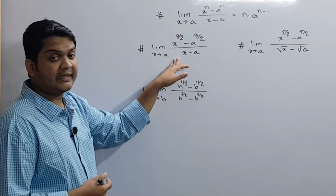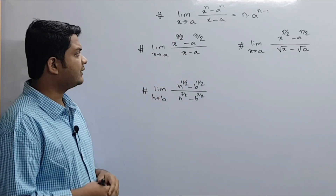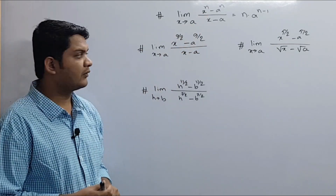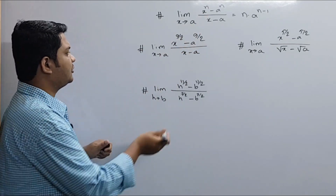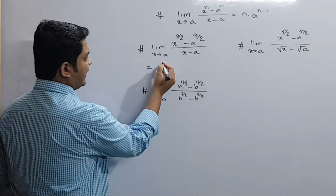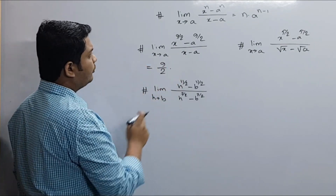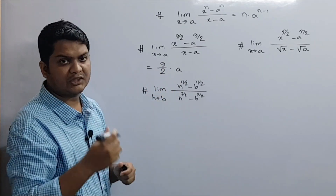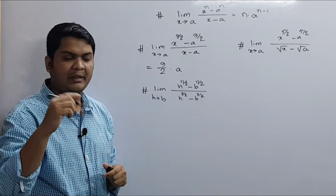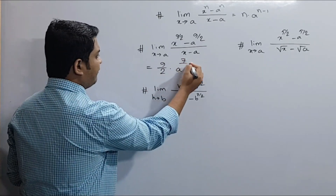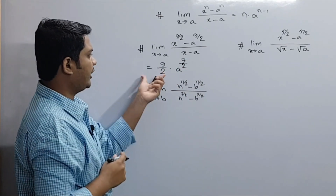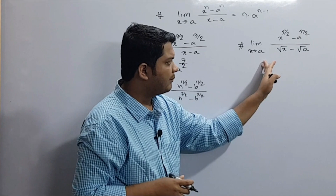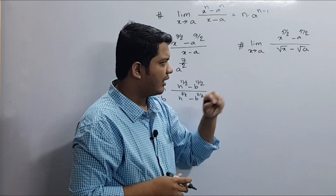The formula to compare is that n is 9 by 2. So the formula gives n times a to the power n minus 1, that means 9 by 2 minus 1, so 9 by 2 minus 1 is 7 by 2. So the answer involves x to the power 5 by 2 minus a to the power 5 by 2.